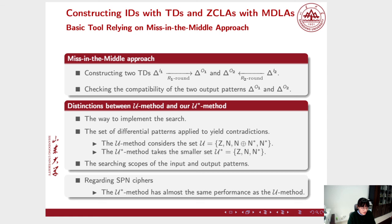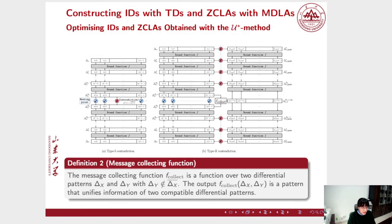Thirdly, the difference also lies in the searching scopes of the input and output patterns. So in this sense, we partially handle the long-standing incomplete searching problem in the field of ID and ZCLA. As discussed in previous literature, the U method only centers on the contradictions at the meeting point. However, in some cases, although the two differential patterns at the meeting point are compatible with each other, the given input and output difference still encompass inconsistency. Based on this observation, we intend to generalize the basic approach so that we can detect impossible differential with contradictions belonging to the second category.